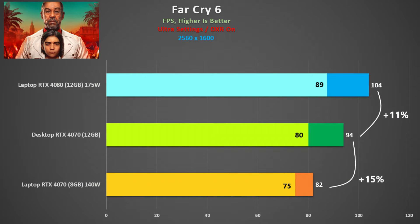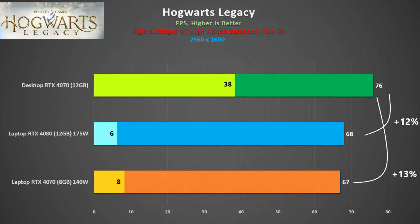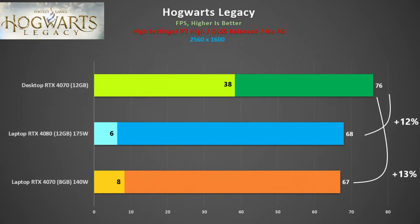Far Cry 6, even at this resolution and ultra settings, is quite CPU dependent, so the delta between the cards is smaller. We have 11% in favour of the laptop 4080, as the desktop card's boost clock is not at its maximum and the difference in shader count plays more of a part. Hogwarts Legacy is infamous for stuttering on laptops, even with the 4080, and this is reflected in the very low 1% lows. The desktop 4070 holds the advantage in average frame rate and is definitely more fluid in gameplay. The laptop 4070 performs just like the 4080 version, which suggests there's a bit of a CPU bottleneck, and perhaps that's the reason why the desktop does so well.